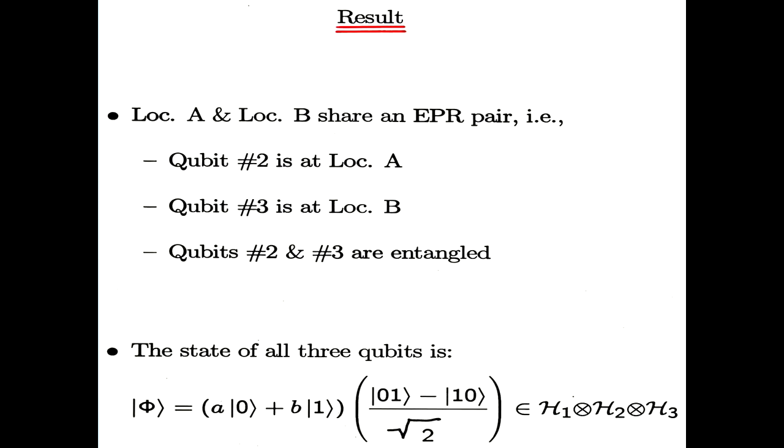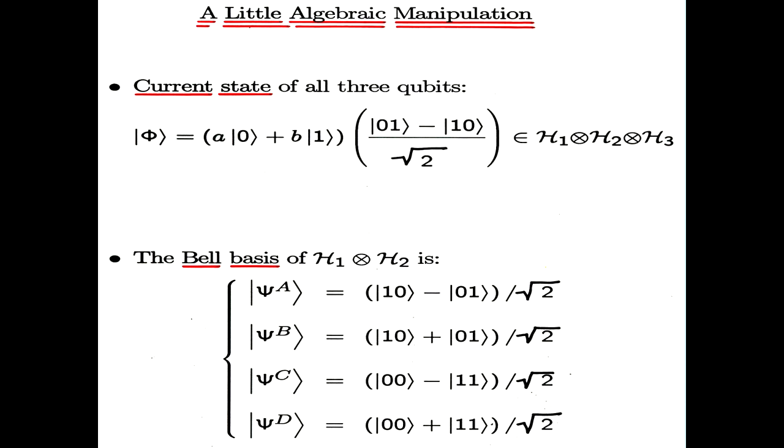So now we have location A and B share EPR pair. Qubit two is at location A. Qubit three is at location B. Qubits two and three are still entangled, although they are separated. The state of all three qubits, of course, we bring in a qubit. Perhaps someone knocks on our door with a box and asks us to teleport a qubit. And what's shown here is qubit number one, A ket zero, B ket one. So the total state of all three qubits is as shown, living in the tensor product of Hilbert spaces.